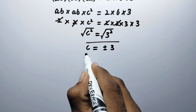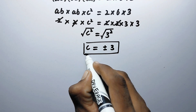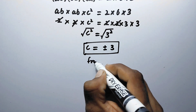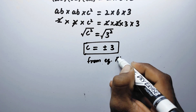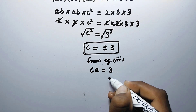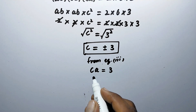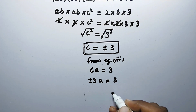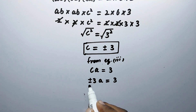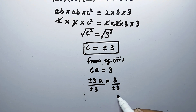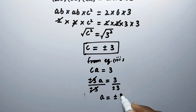That is the value of c. Now from equation number 3, we have c·a = 3. By putting this value of c here, this will be plus or minus 3 times a equals 3. To eliminate this 3, we divide both sides by plus or minus 3, so now a will be equal to plus or minus 1.